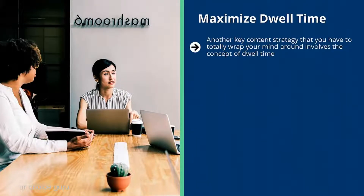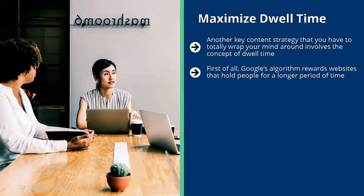Maximize dwell time. Another key content strategy involves the concept of dwell time — when you get people to visit your website, try to get them to stay for as long as possible. Google's algorithm rewards websites that hold people longer. If your website shows up in search results and a person clicks and takes a long time to get back to Google, the algorithm rewards your site and punishes websites that people bounce out of immediately.